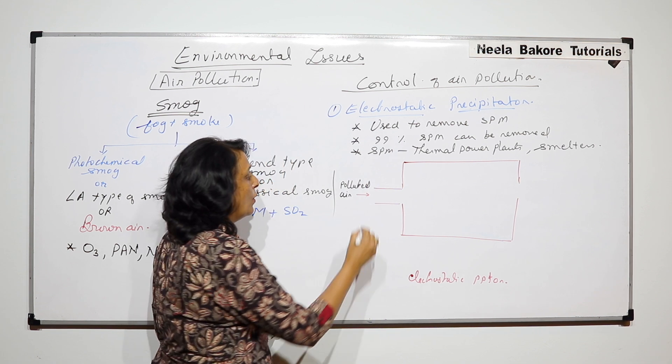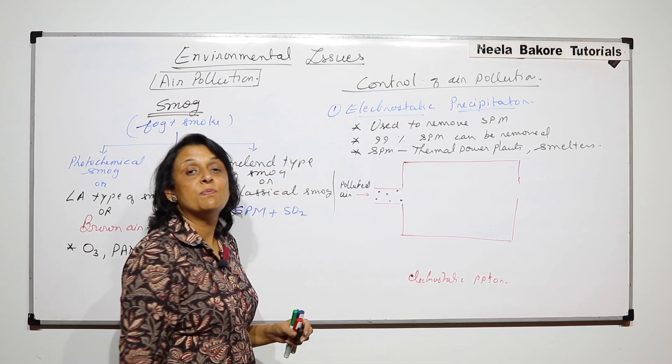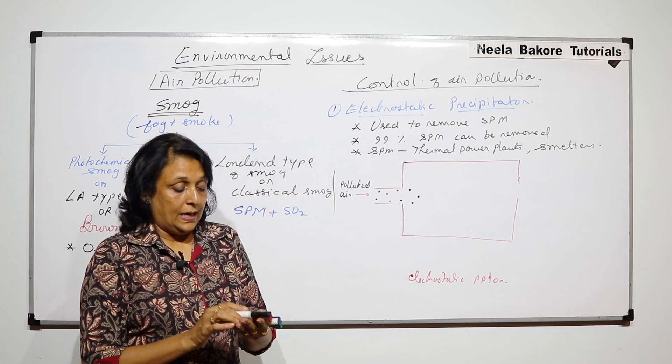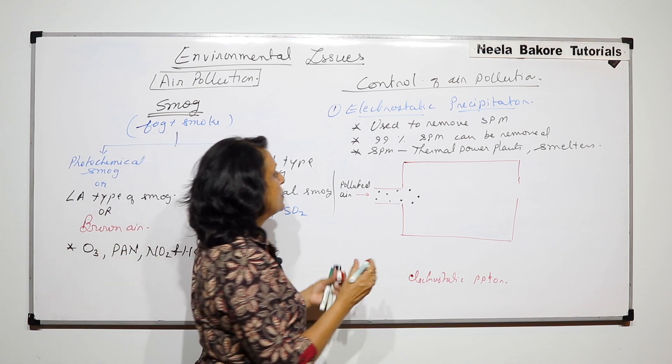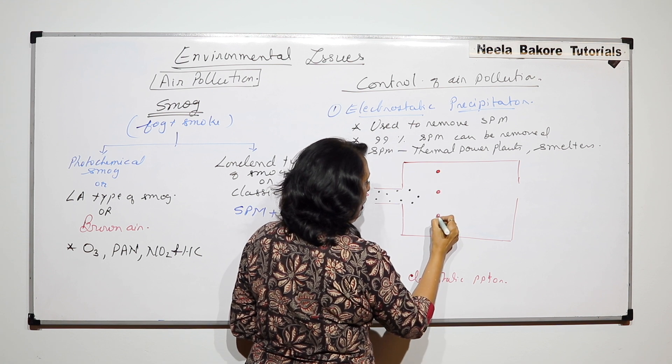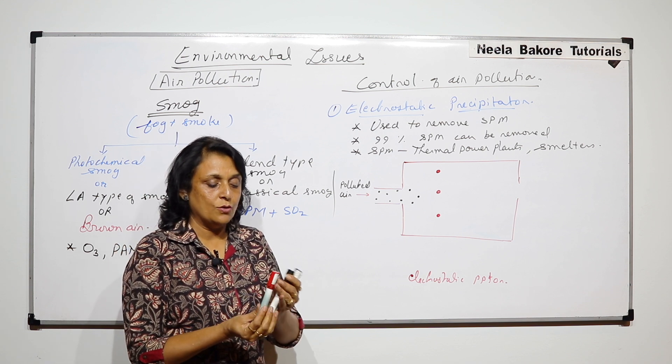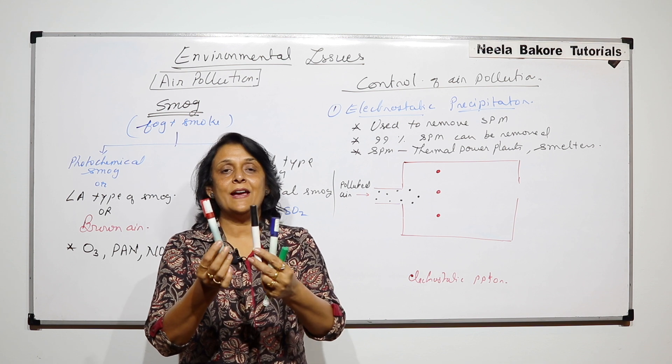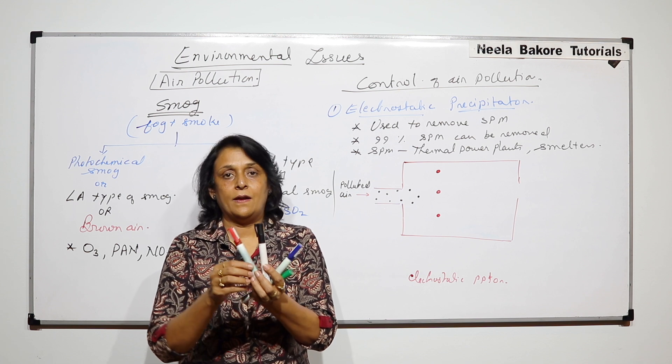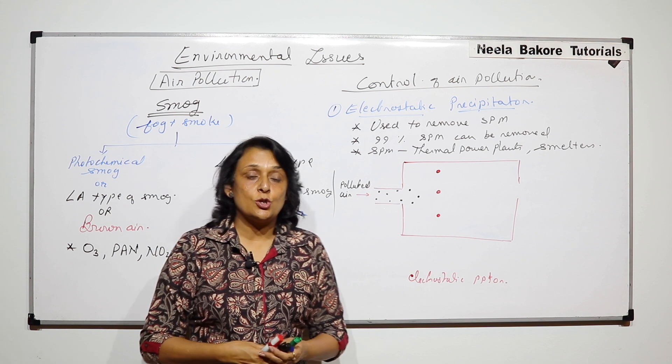Polluted air is going in and as we know that this is polluted with suspended particulate matter, we are just showing them with little dots. Inside the electrostatic precipitator there are either wires or plates. So if these are the wires, then the wires are going to be like this. Suppose these are three different wires which are supplied with high voltage electric current and through these the air is going to pass.